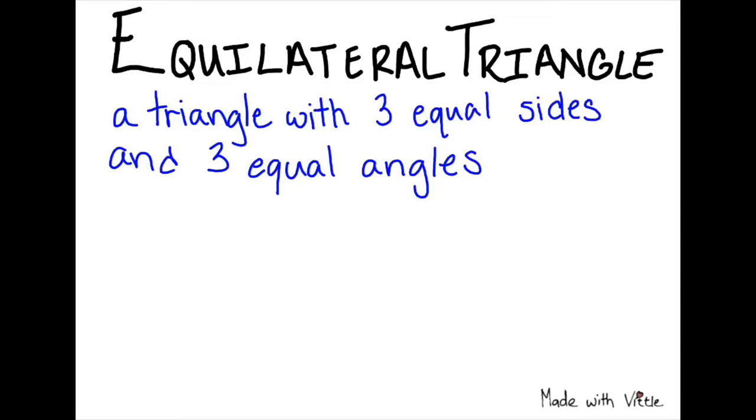The next way we can group triangles is by their sides. Our first type of triangle is an equilateral triangle, which is a triangle with three equal sides and three equal angles. We mark the sides and angles as equal by using what's called congruency marks, the blue dashes and the red curves.